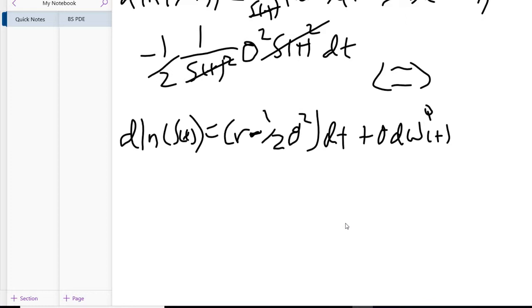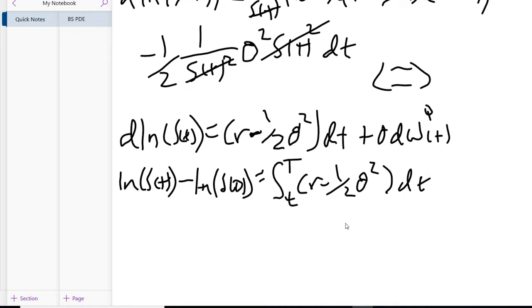How do we get rid of these things? Well, first let's start with just getting rid of the differential. Basically what we're going to do is integrate, so we're going to have ln(S(T)) - ln(S(t)) equals the integral from little t to big T of (r - (1/2)σ²)dt plus the integral from little t to big T of σdW_Q(t). I'm doing from time little t to time big T, not from zero to little t.